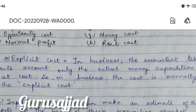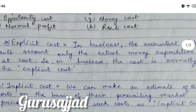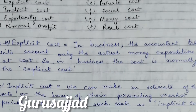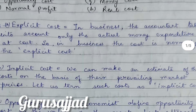First: explicit cost. In business, the accountant takes into account only the actual money expenditure as cost. So in business, the cost is normally the explicit cost. Explicit cost is the cost that a business has incurred which is actually spent — not estimated, actually spent. For example, if we have a budget of Rs. 1,00,000 and I have an expense of Rs. 90,000, then Rs. 90,000 will be my explicit cost, not the budgeted cost.